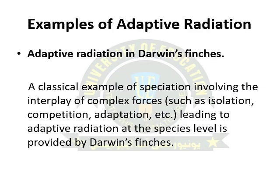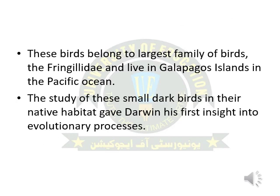Dear students, here is another classic example of adaptive radiation in the form of Darwin's finches. As I have already told you, there were approximately 13 different species of finches on the Galapagos Islands, and the 14th species was living on the mainland. All 14 species have different beaks according to their feeding habits. These finches belong to the largest family of birds called Fringillidae and lived on the Galapagos Island located in the Pacific Ocean.